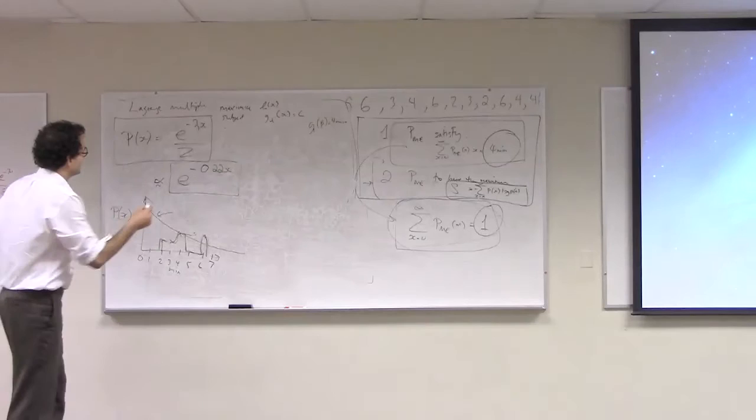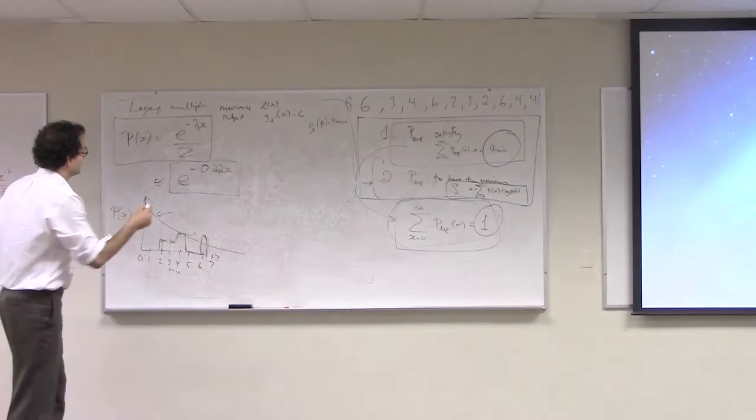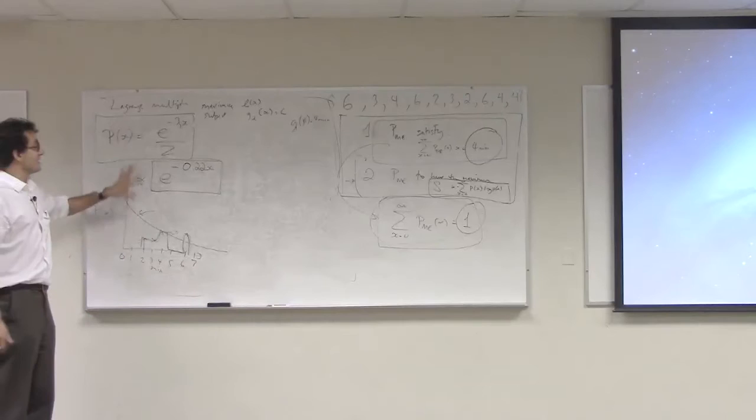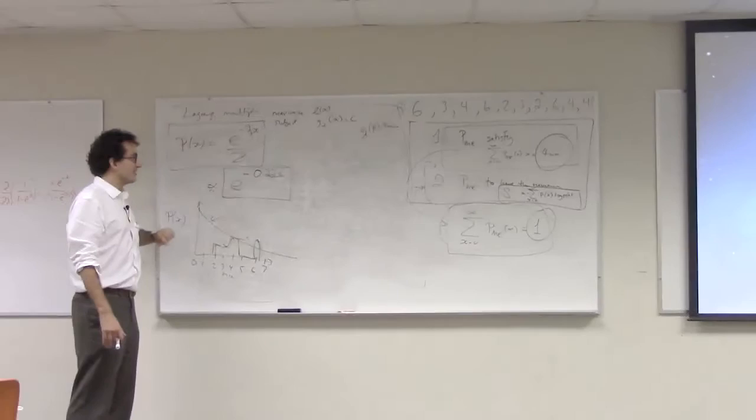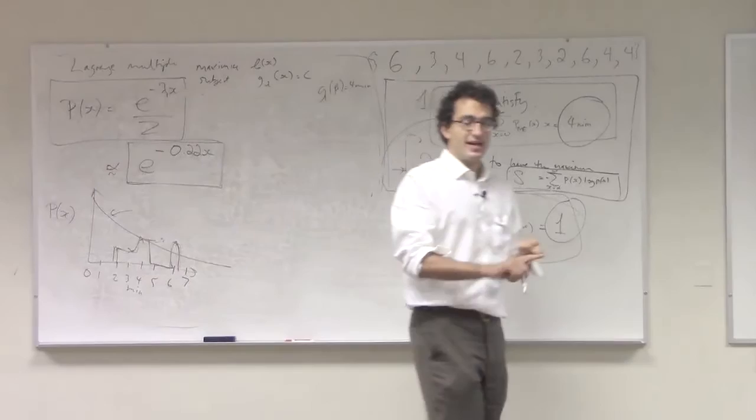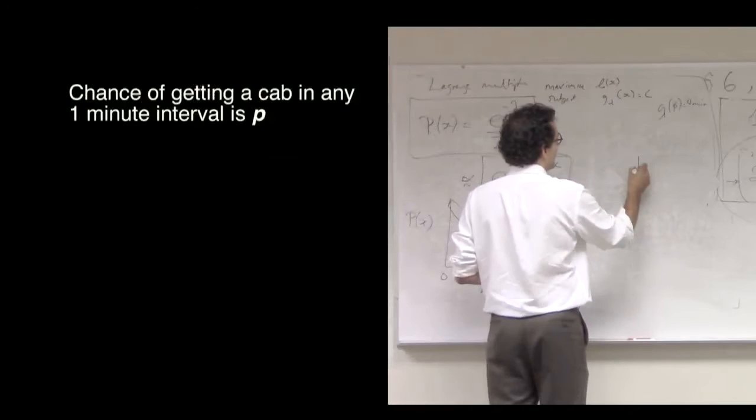This method is totally agnostic about the actual underlying physics or cognitive science or sociology of the problem. But, let's go and look and see if there's any implicit mechanistic model that maximum entropy has kind of implicitly given to us. In particular, let's see if we can construct, and we'll be able to do this quite easily, an underlying mechanistic model for catching a cab in New York that produces the same probability distribution. And so, what I'm going to do, is I'm going to say the chance of you getting a cab in New York is constant and independent of time. And in particular, the chance of you getting a cab in any one minute interval is P.